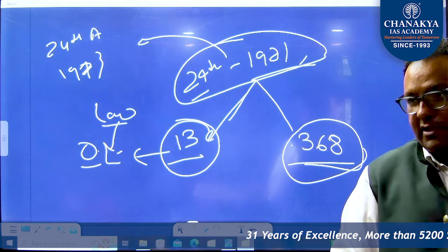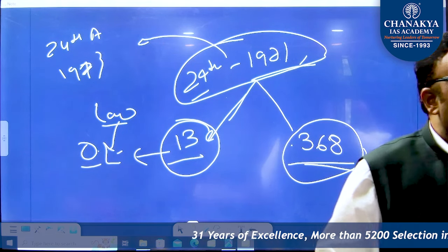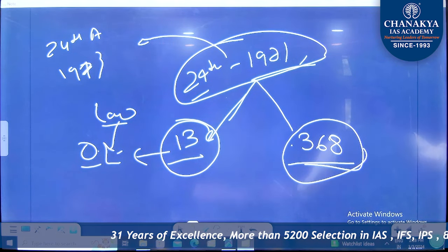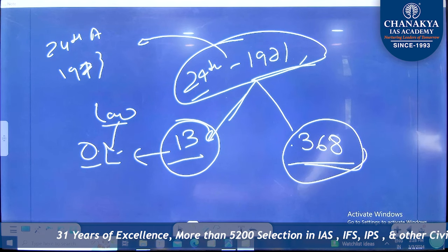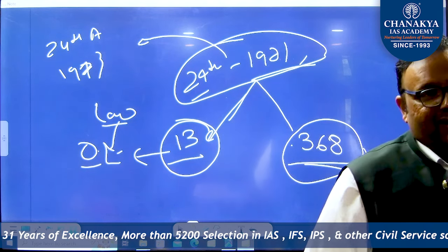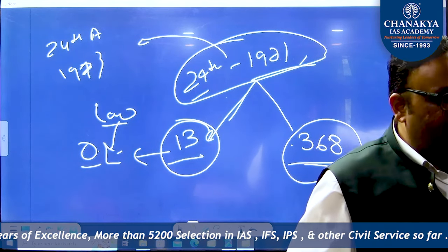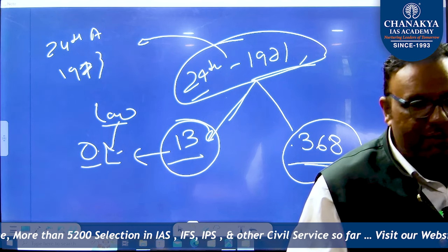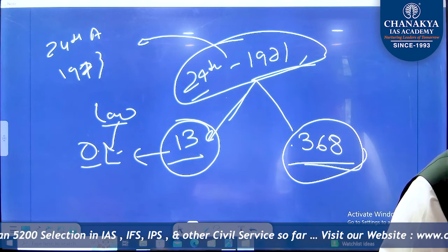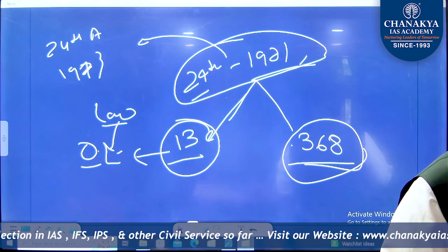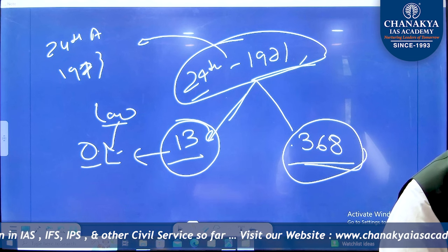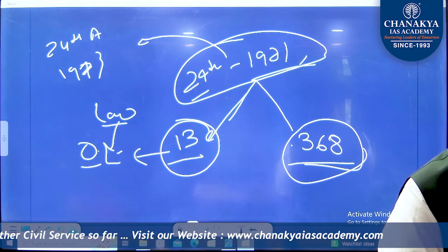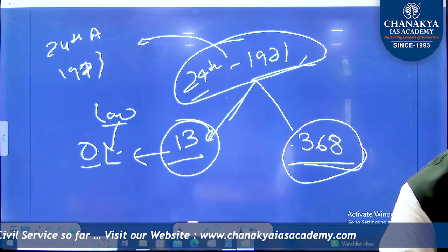Some examples of basic structure: single citizenship, written constitution, federal structure, adult and uniform suffrage. The list is unending. Independence of judiciary is also part of basic structure - that is why the National Judicial Appointment Commission was declared unconstitutional, as it was against the concept of independence of judiciary.